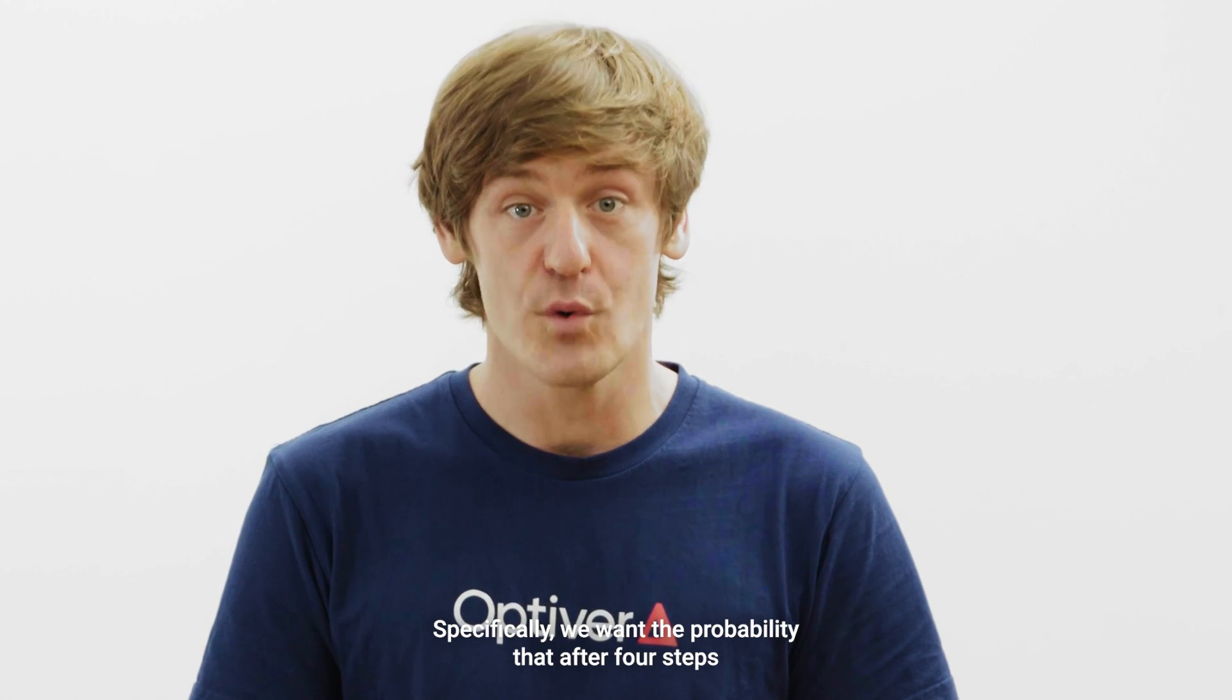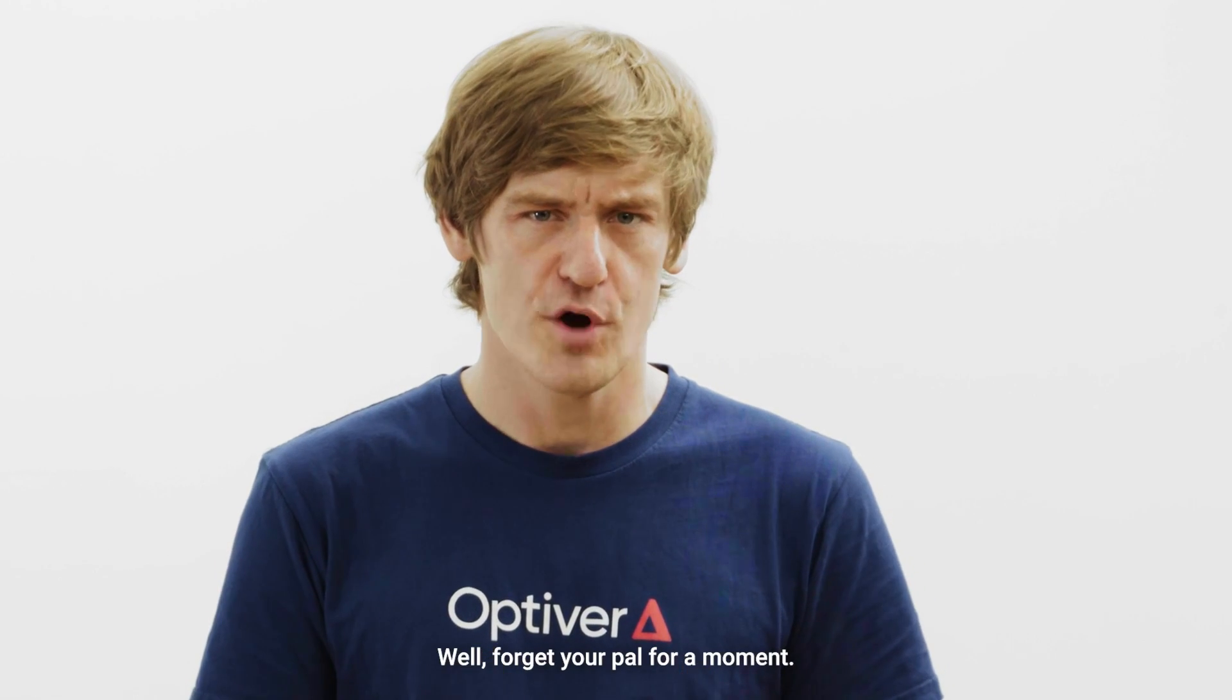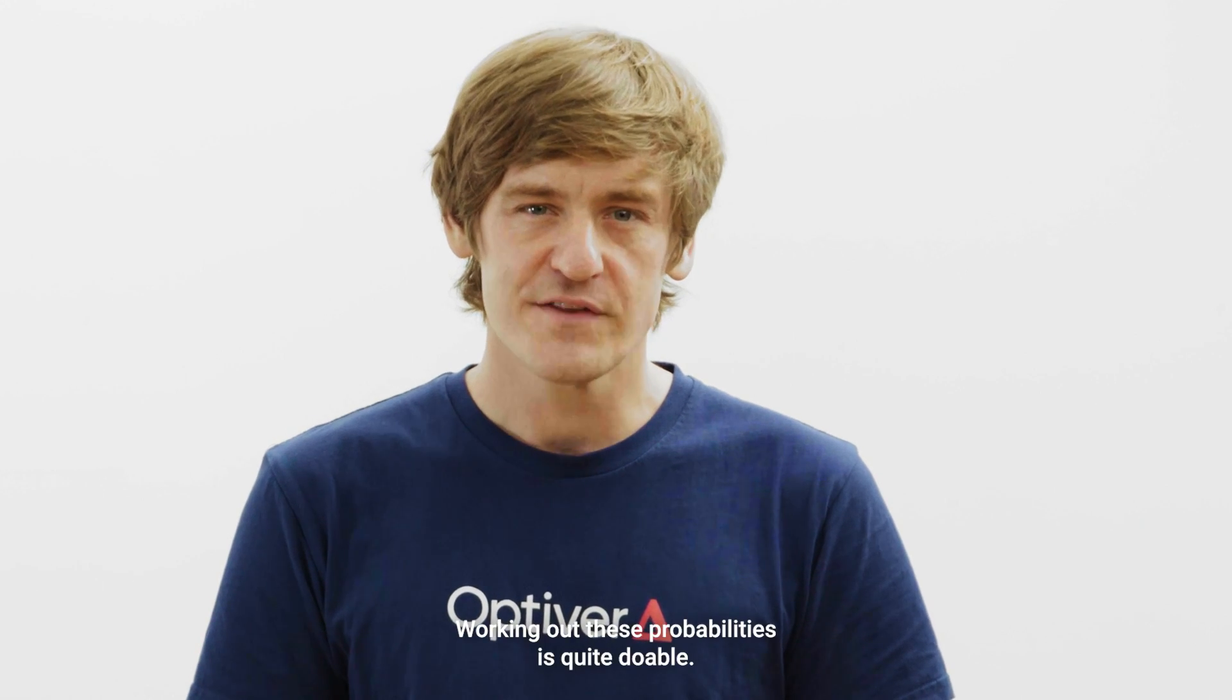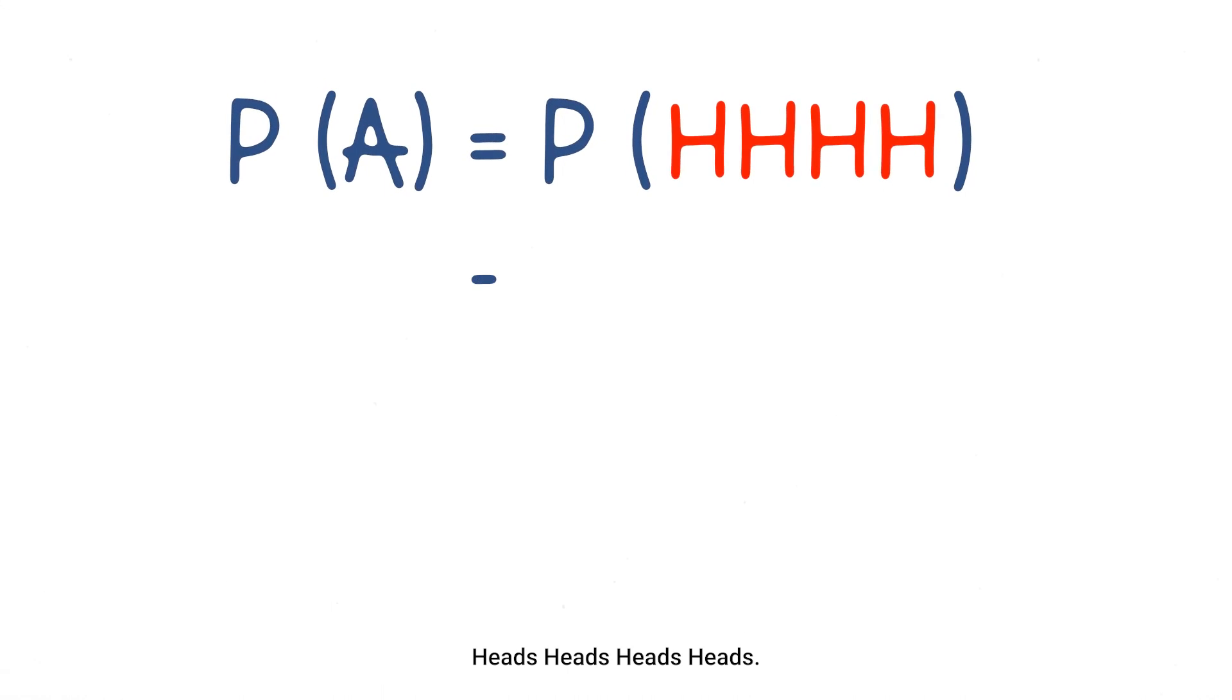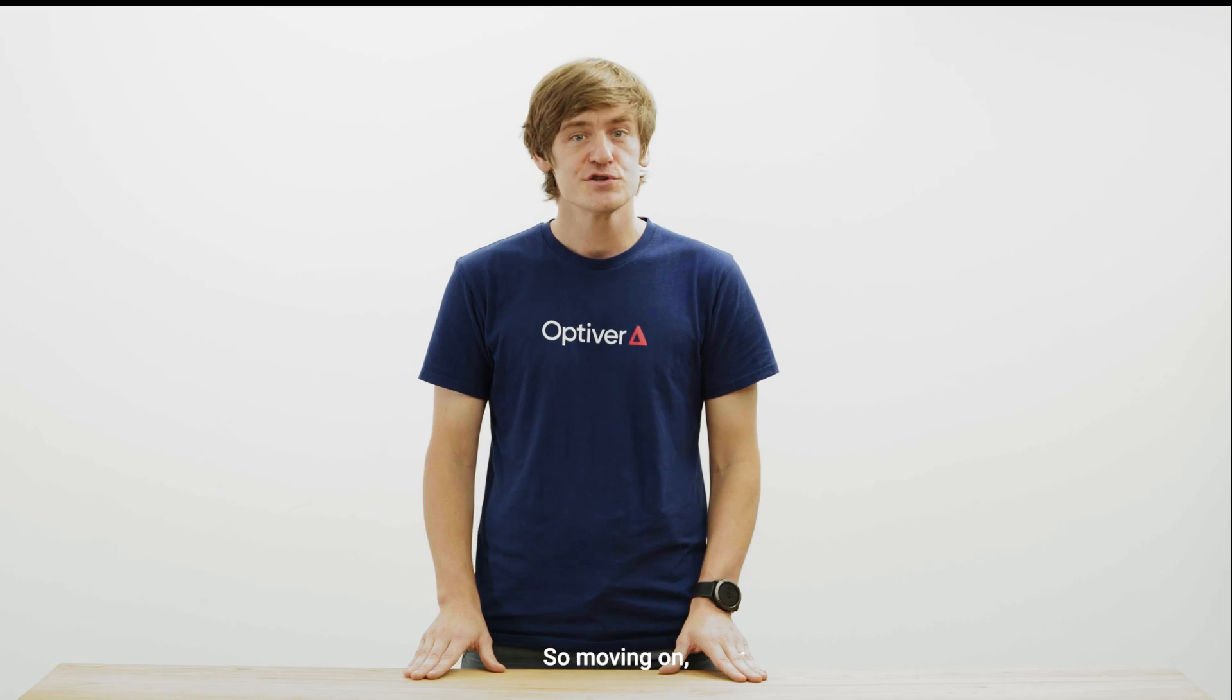Specifically, we want the probability that after four steps, your friend is at the same point as you. For each of the possible meeting points, what is the probability that you will end up there? Working out these probabilities is quite doable. The only way to get to point A is with the sequence of coin flips heads, heads, heads, heads. There is a one-half to the power of four, or one-on-sixteen chance that this happens. We can quickly argue by symmetry that the probability of getting to E is the same as getting to A. This is because here you need the complementary sequence tails, tails, tails, tails.